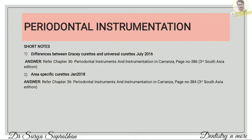Coming to periodontal instrumentation — differences between Gracey curettes and universal curettes. Refer to chapter 36, Periodontal Instruments and Instrumentation, page number 386. There are 4 points in a table; along with that, add examples for Gracey curette and universal curette, making a total of 5 points. Area-specific curettes can also be found in chapter 36, page number 384.